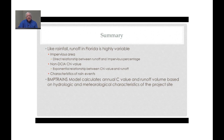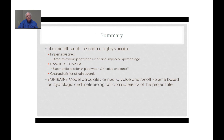In summary, just like rainfall, runoff in Florida is highly variable. It depends upon the impervious area, the non-DCIA curve number value, and the characteristics of rain events depending on where you're located within the state. The BMP Trains model takes all of these factors into consideration and calculates an annual C value and annual runoff volume based upon the site-specific hydrologic and meteorological characteristics of the project site.